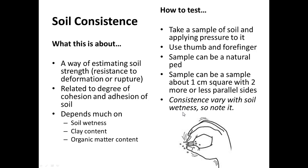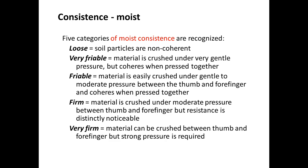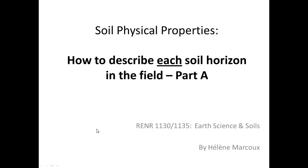Consistence varies with wetness, so you need to note the wetness of the soil at the time. We're going to use the moist consistence categories because our soil will probably have some moisture in it. When you squeeze it between your thumb and finger, was it loose? Very friable? Friable? Perhaps firm or very firm? You can read through these categories when you're in the field. This was an overview of Part A; next will be an overview of Part B.